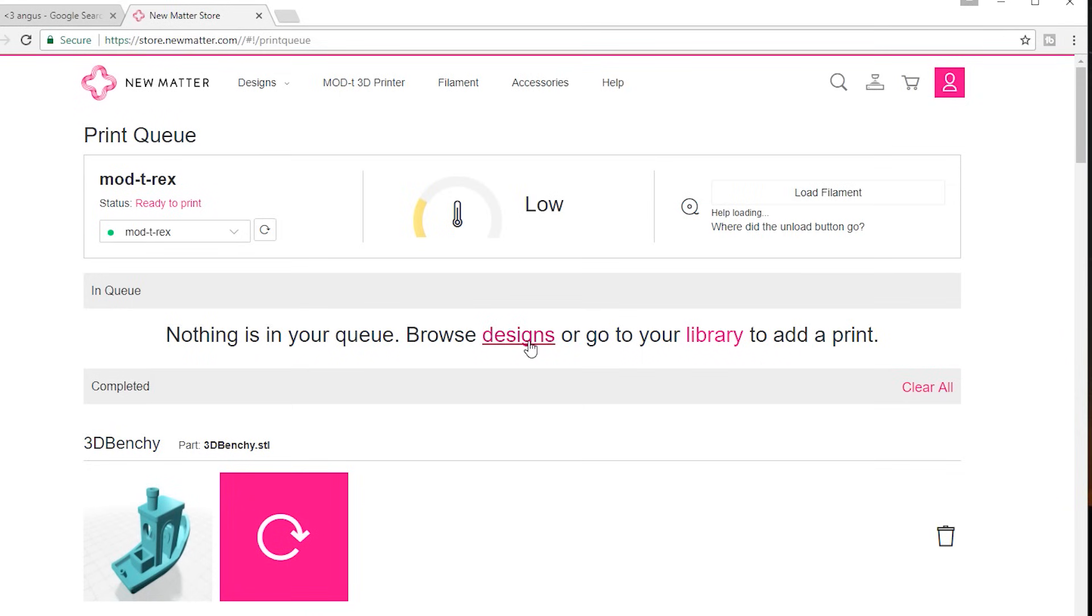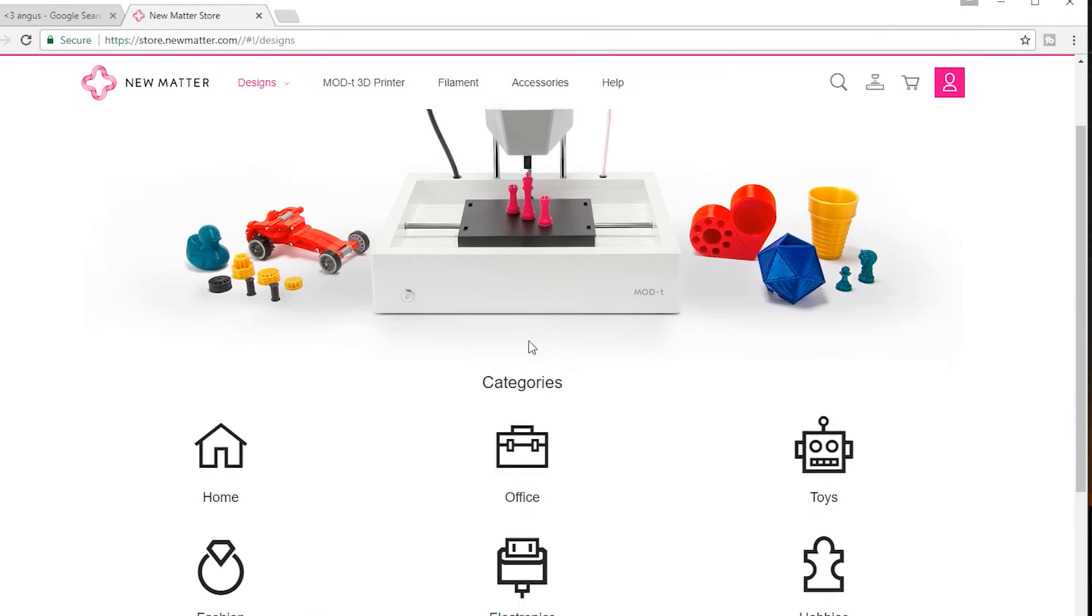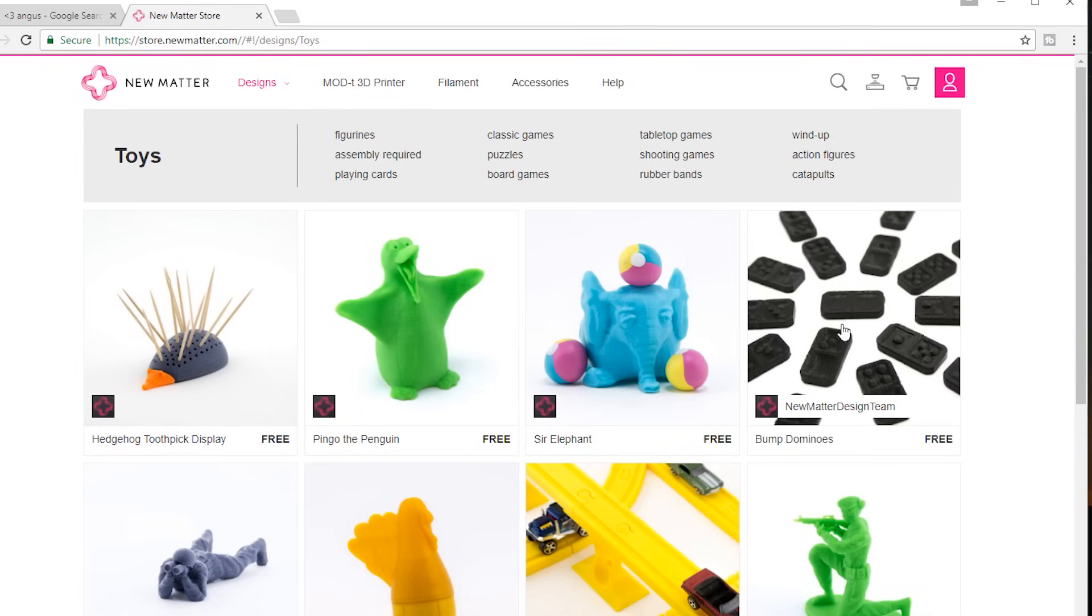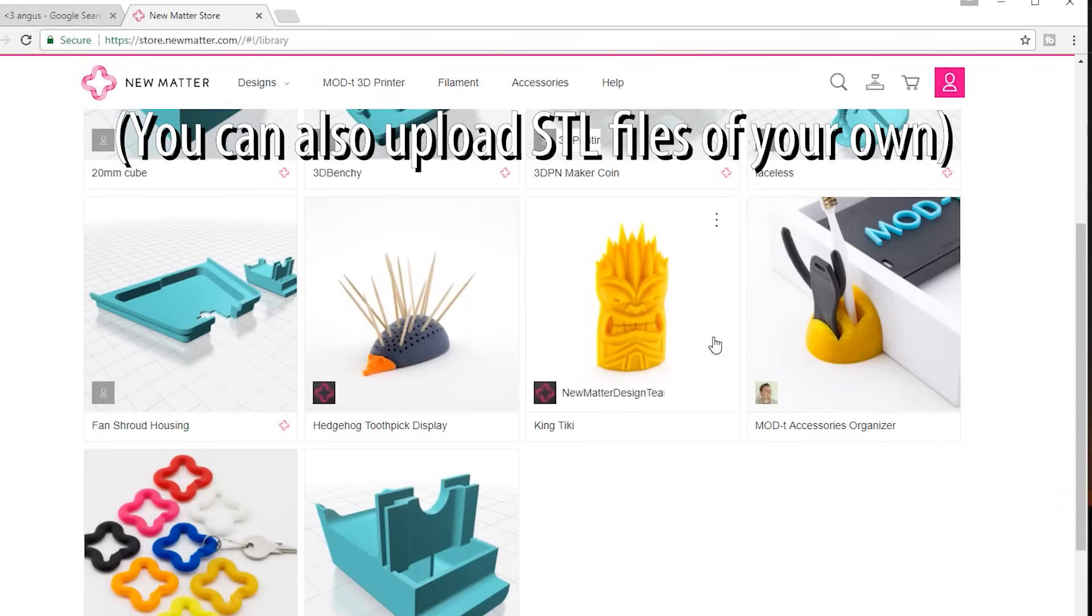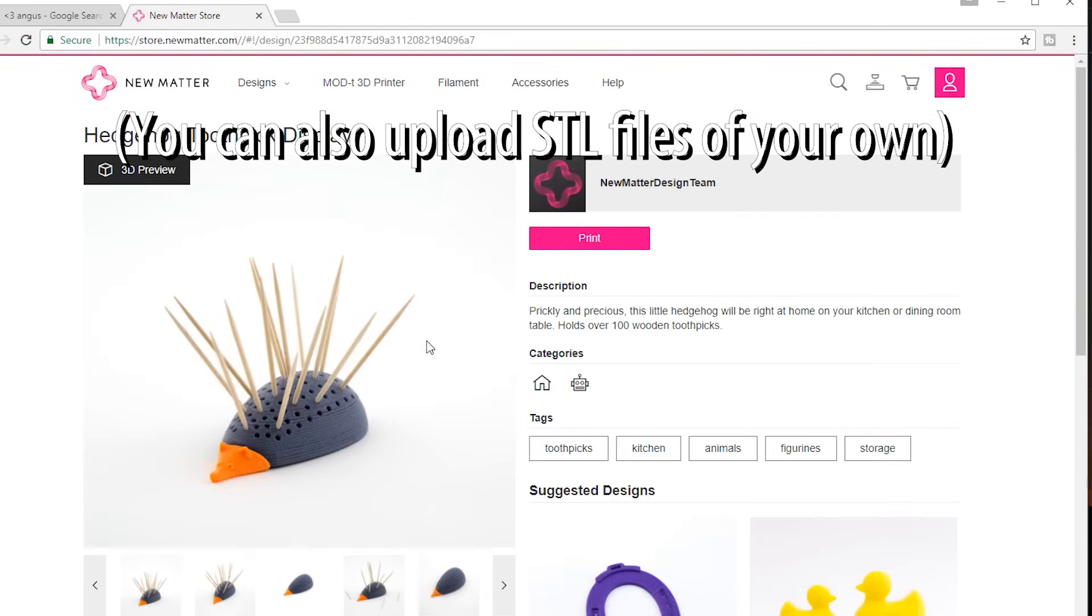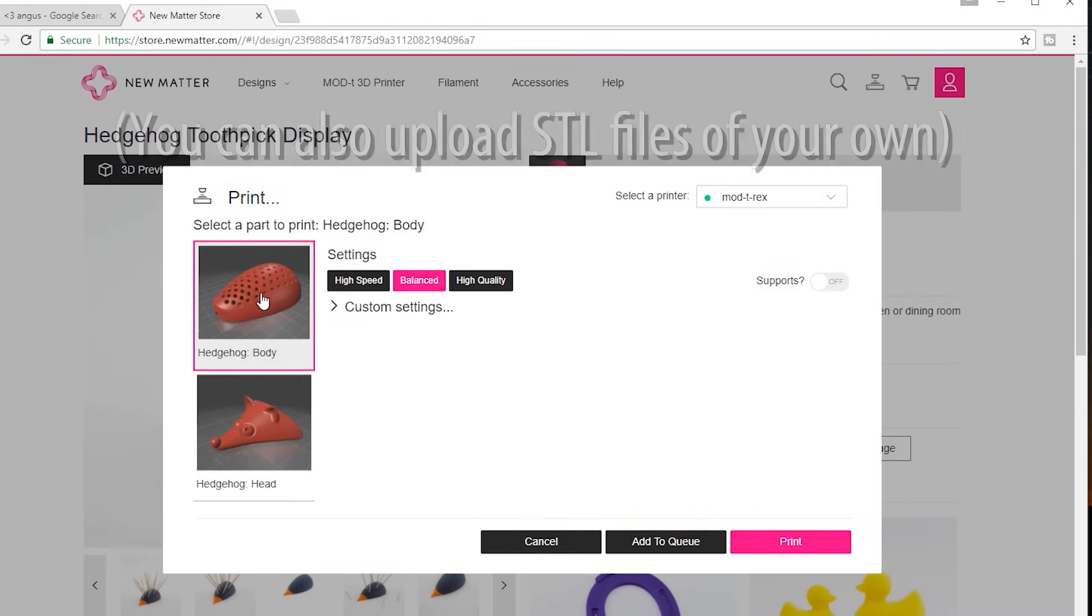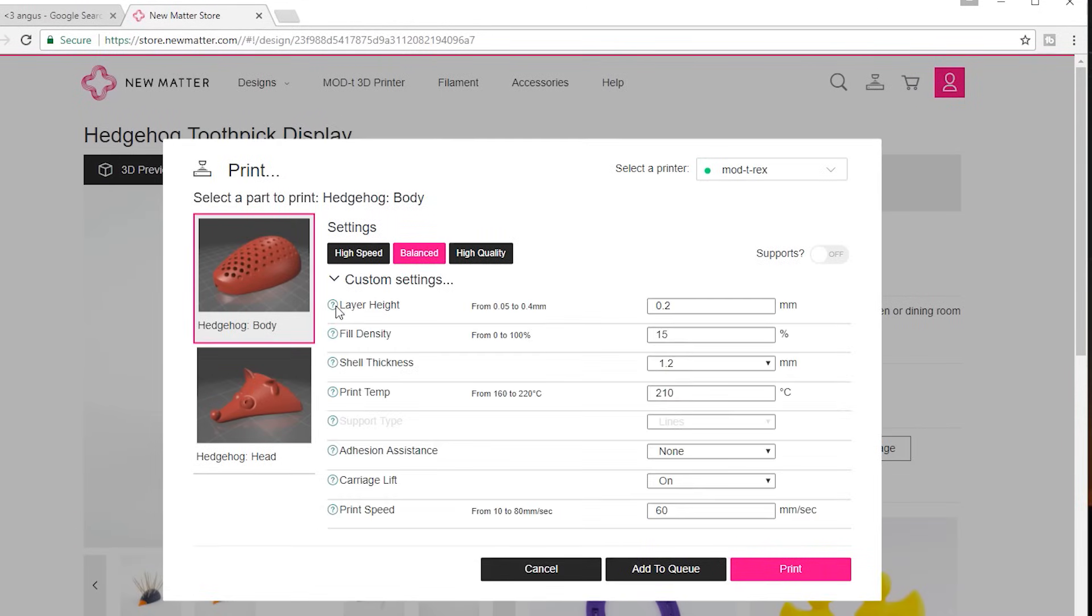The Mod-T has only one button and everything is handled via the cloud you access via a web browser. Numatter has quite a few designs on the site with more added by users all the time. Once you pick the model you want from the design library you add it to your library. Once the model is in your library you pick that design then click the print button. If your model has multiple parts you can pick the part to print. Also your print settings can be chosen via the pre-configured shortcut buttons or via custom settings where you can change things such as layer height, infill, temperature, and print speed. Once you're ready click the print button.